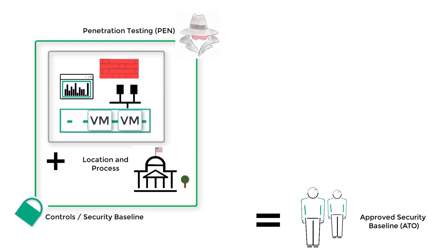A security baseline is a security baseline, and the process and those variables that make up that secure baseline are hardware, software, process, and location. But certifications are a little bit different, as you can see here being drawn out on the screen.